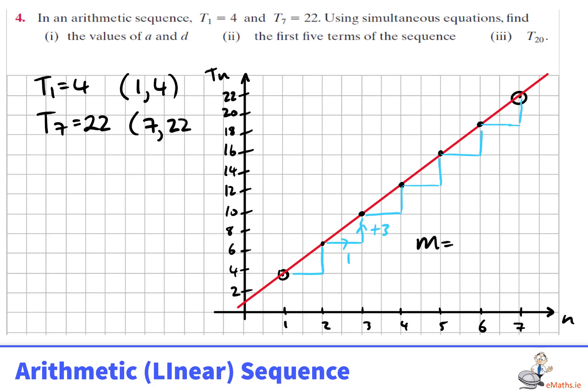We could see when we look at this line that it has a slope of 3, that it crosses the y-axis at 1. And since y is equal to mx plus c, we could see that term n must be 3n plus 1.